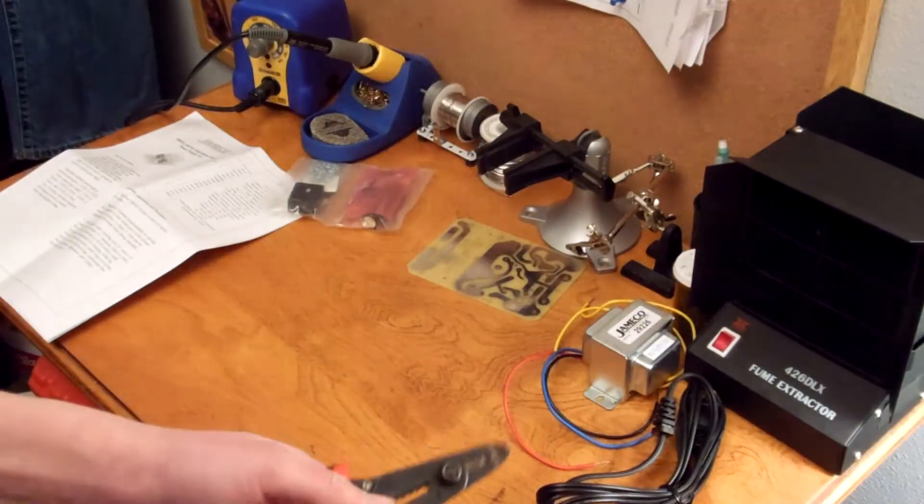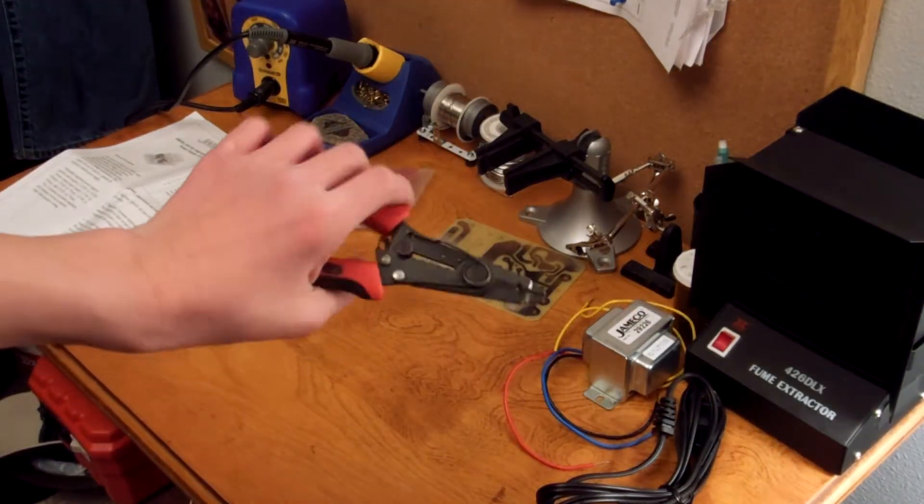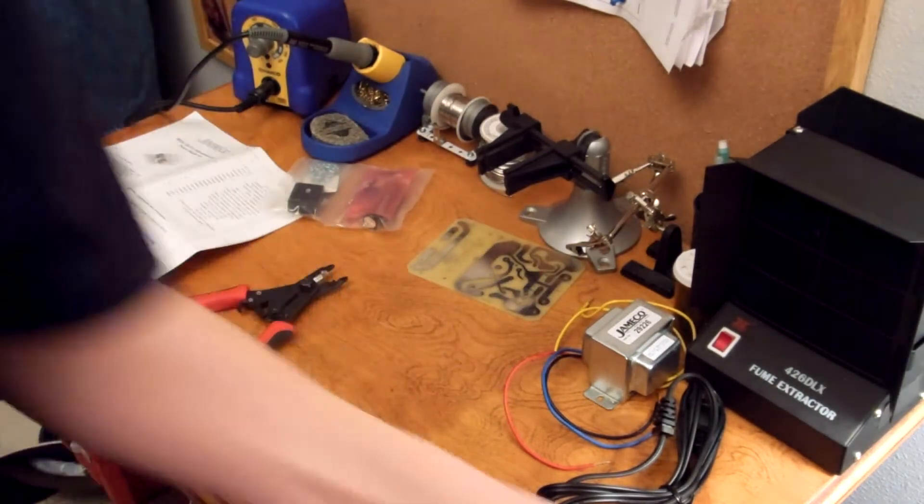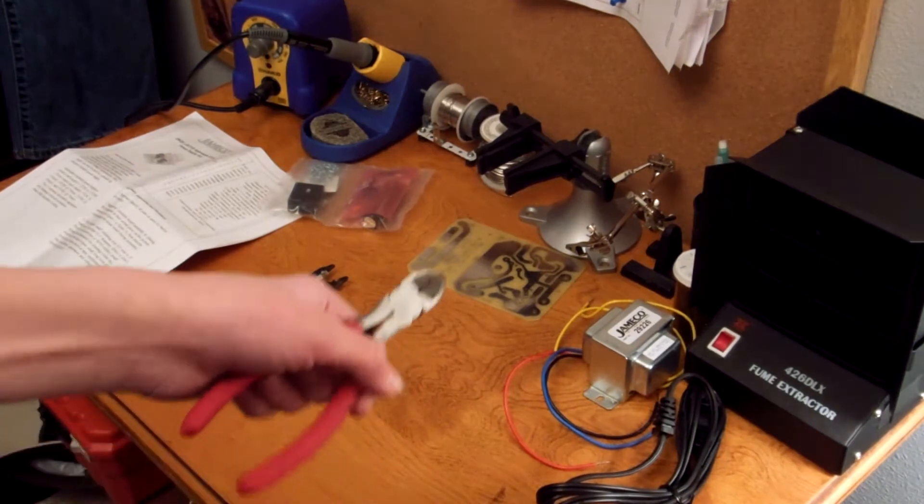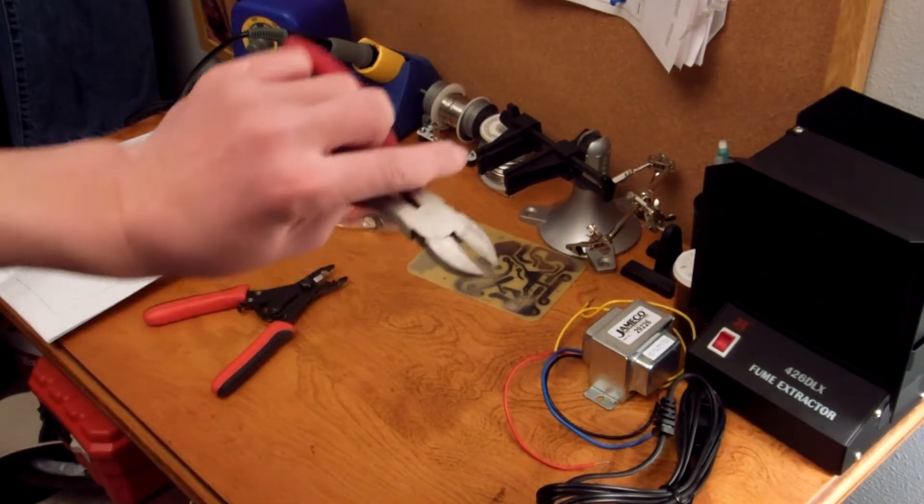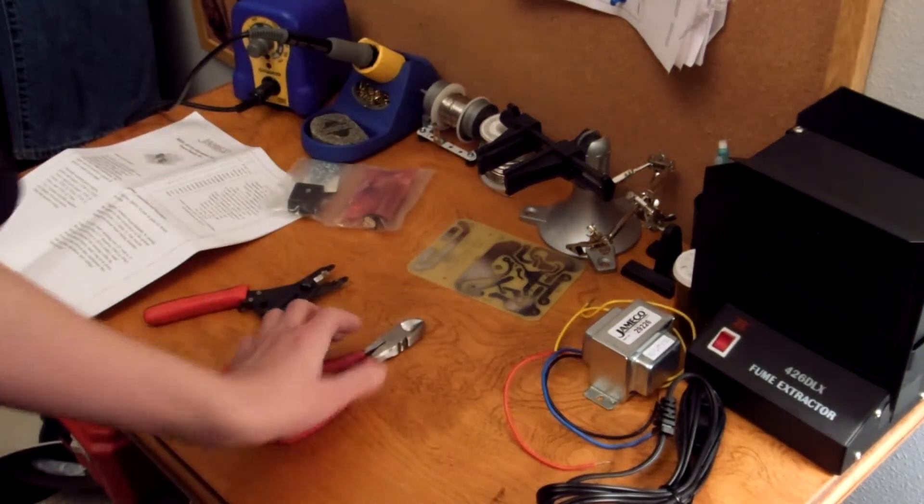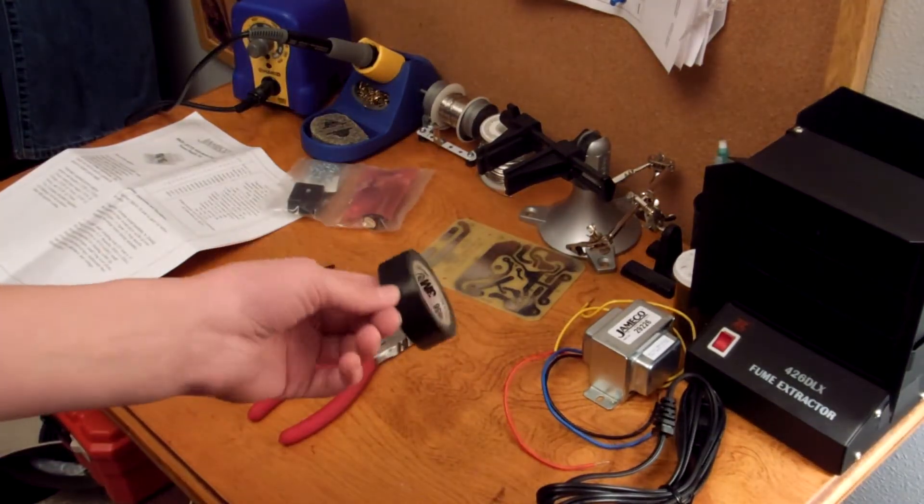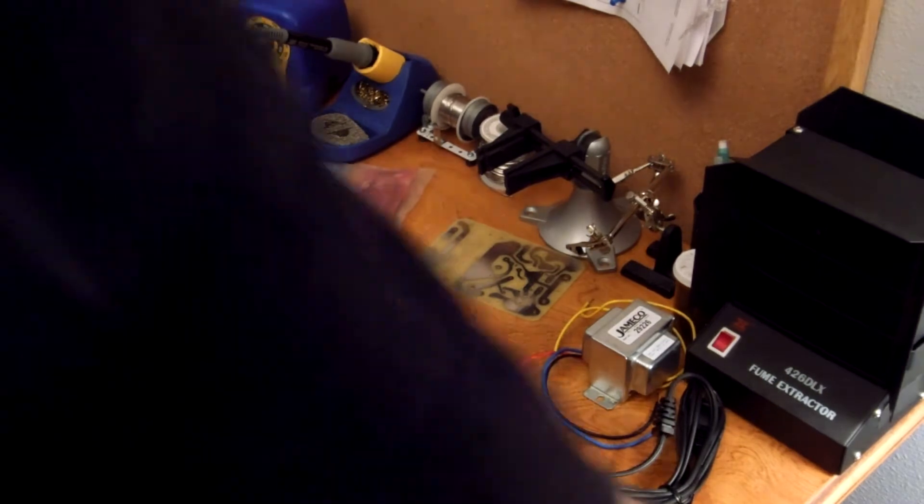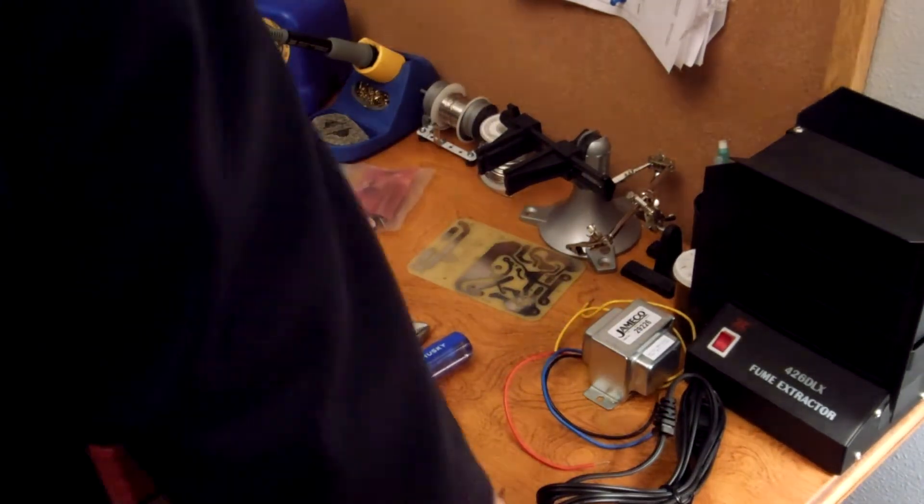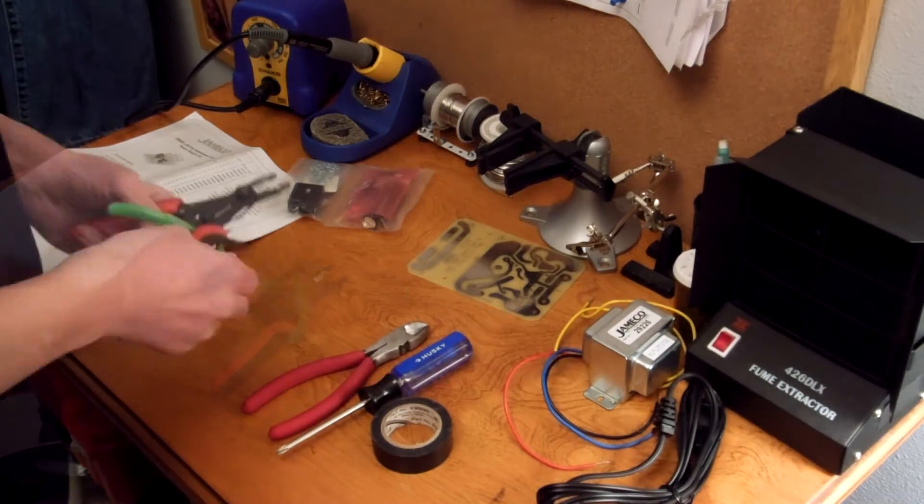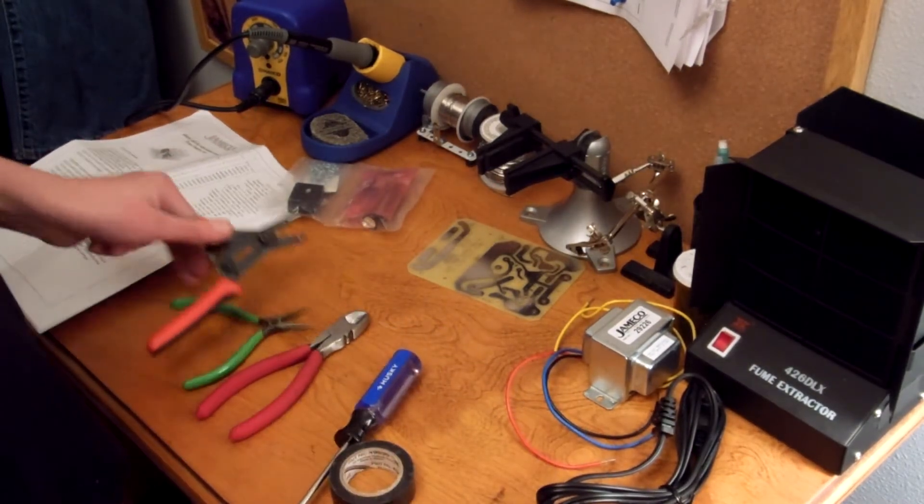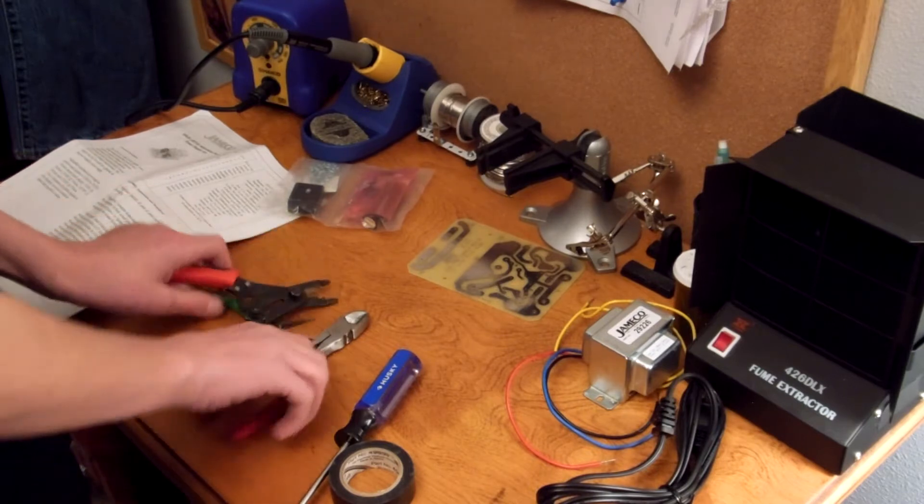You're going to need wire strippers. Mine's adjustable, and there's also wire cutters built in. To cut the little leads off of the PCB board, you're going to want some nice side cutters. You're also going to need electrical tape, and you're going to probably need a screwdriver and some pliers. You may not have all these tools, but you can get them at Jameco if you don't.